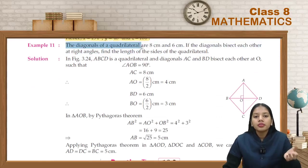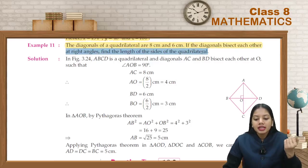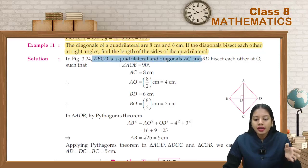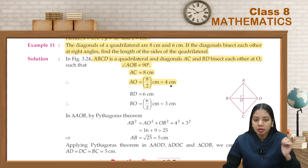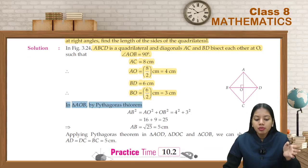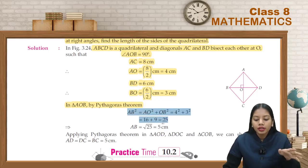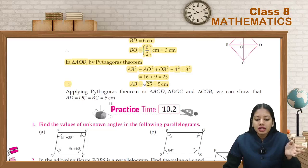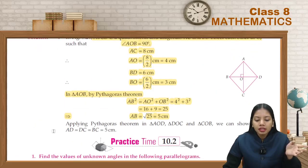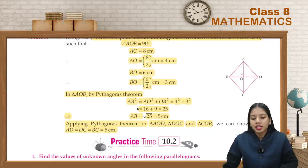The diagonals of a quadrilateral are 8 cm and 6 cm and bisect each other at right angles. Find the side lengths. In quadrilateral ABCD, diagonals bisect at O with angle AOB = 90 degrees. AC = 8 cm so AO = 4 cm; BD = 6 cm so BO = 3 cm. Applying Pythagoras theorem in triangle AOB: AB = 5 cm. Similarly, AD, DC, and BC all equal 5 cm. We can apply Pythagoras theorem in all four triangles to find all sides.